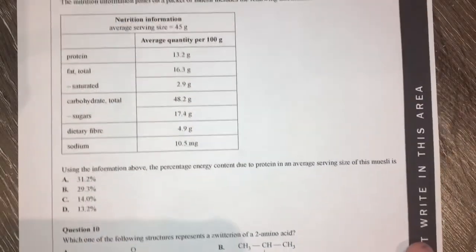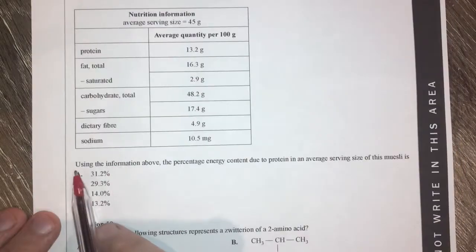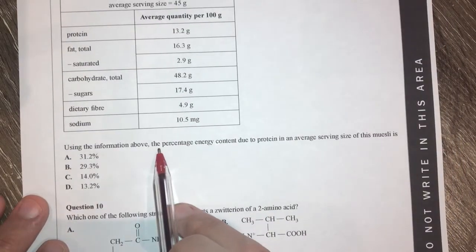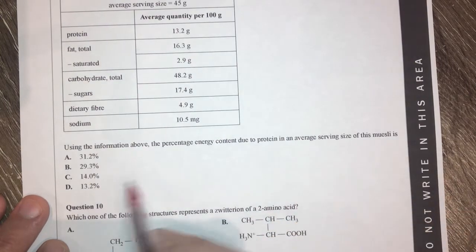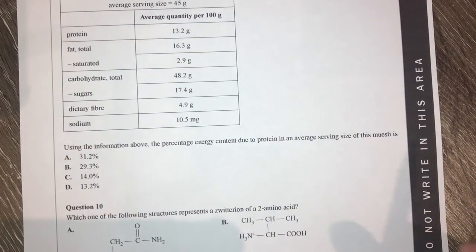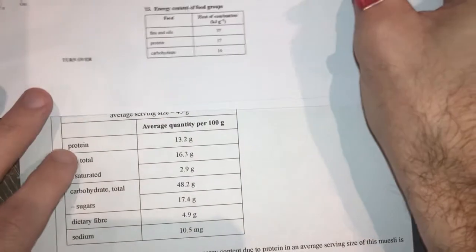Next question. Long one. Lots of information. Here's some nutritional information. Use the above information to provide the percentage of energy content due to protein. So what we need to define is how much energy is produced from this. Again I'm going to need to turn to my data booklet.